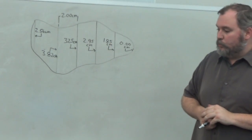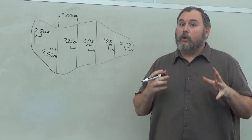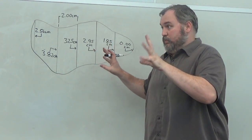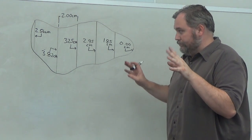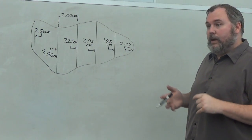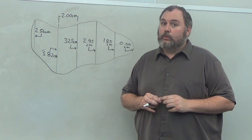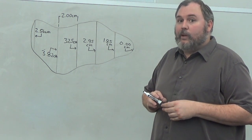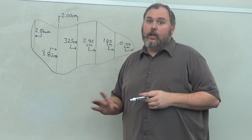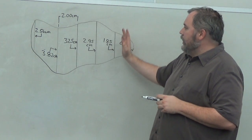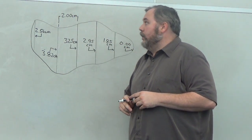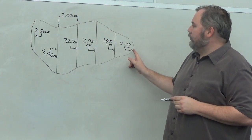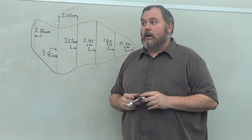Sometimes we get weird irregular shapes that don't follow normal geometric rules. To find their area, we draw parallel lines through the shape. The two methods we'll cover are the Trapezoidal Rule and Simpson's Rule. Both require drawing parallel lines evenly spaced through the irregular shape.